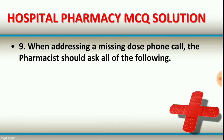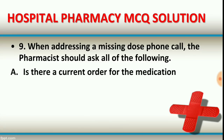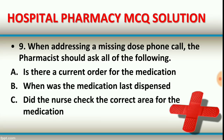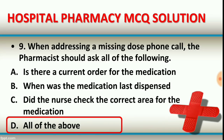Question number nine: when addressing a missing dose phone call, the pharmacist should ask all of the following. Option A: is there a current order for the medication? Option B: when was the medication last dispensed? Option C: did the nurse check the correct area for the medication? Option D: all of the above. The right answer is option D, all of the above — asking whether there is a current order, when it was last dispensed, and whether the nurse checked the correct area.